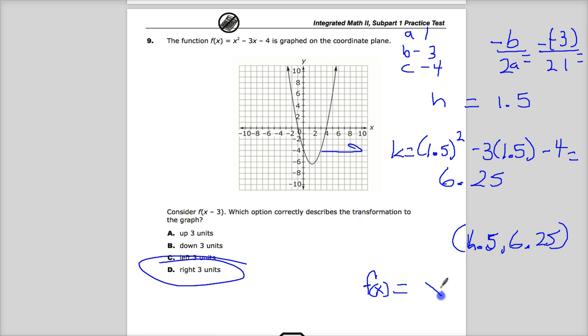Remember, it's x minus h, so it's x minus 1.5, squared, plus 6.25, because it's plus k. Just think back to before. It's the opposite sign.